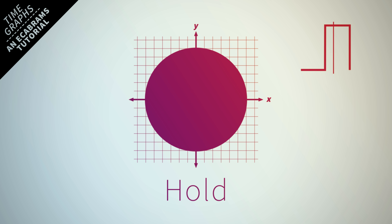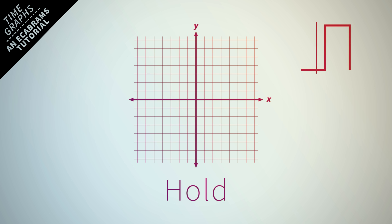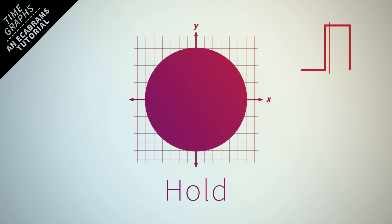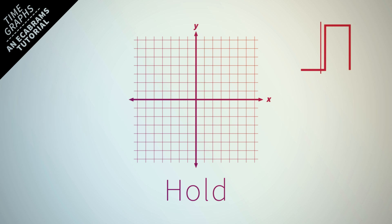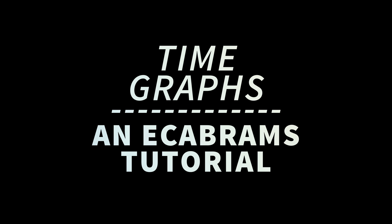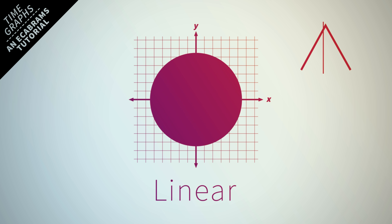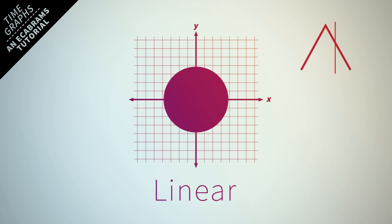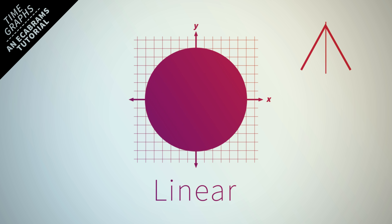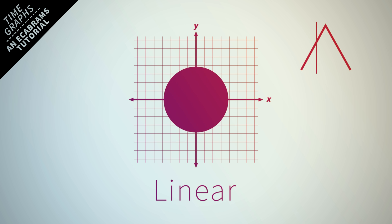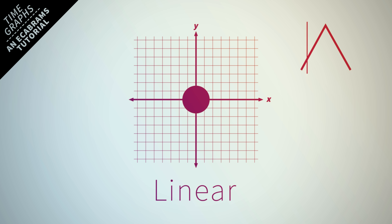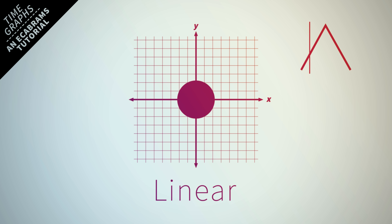The first keyframe is called the hold keyframe and this holds a value, then holds the value and continues holding the value. A hold keyframe means do nothing until you see another keyframe. This next one is called the linear keyframe and you can see on the graph that it is a bunch of lines going between the keyframes, so value zero straight up to 100, straight down to zero. If you're familiar with algebra you'll know that this is a linear slope, so let's go back to algebra class.